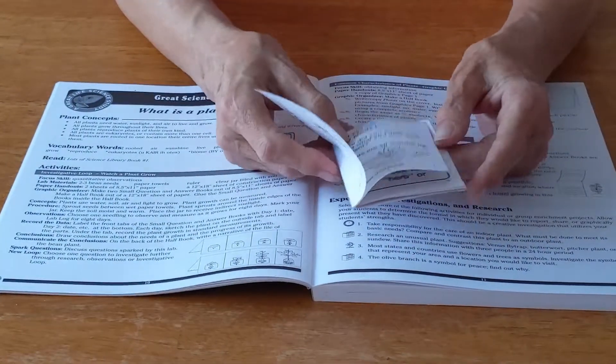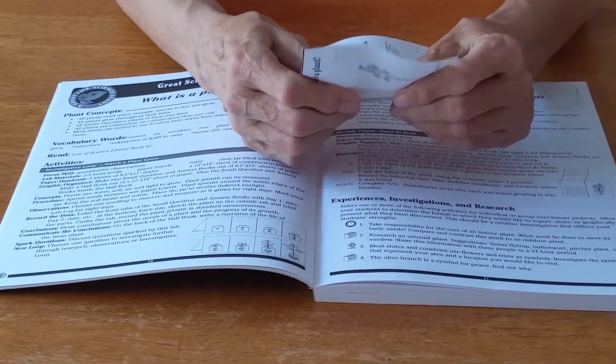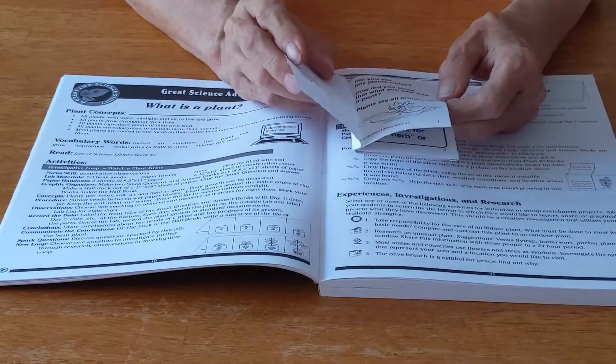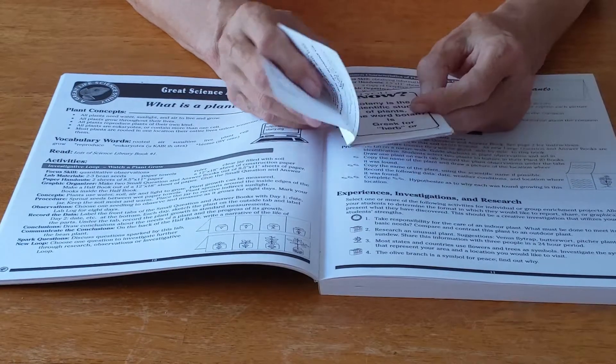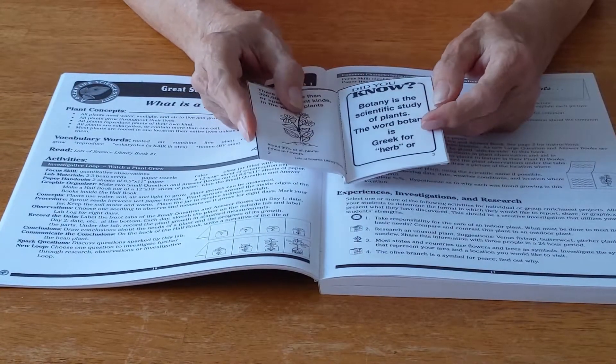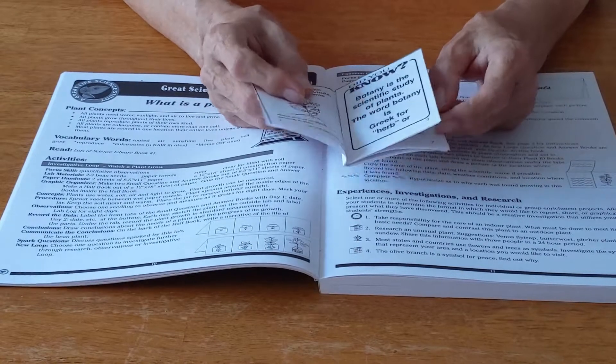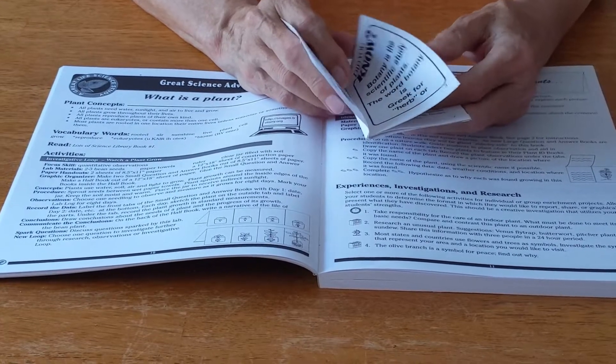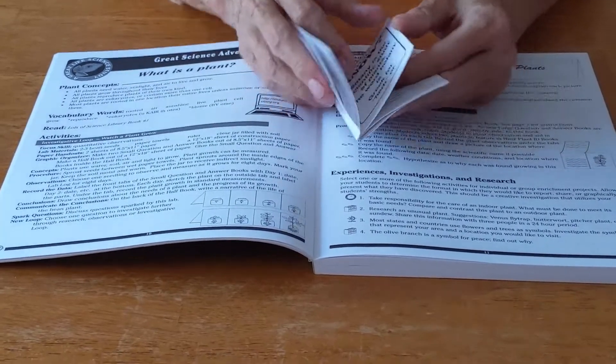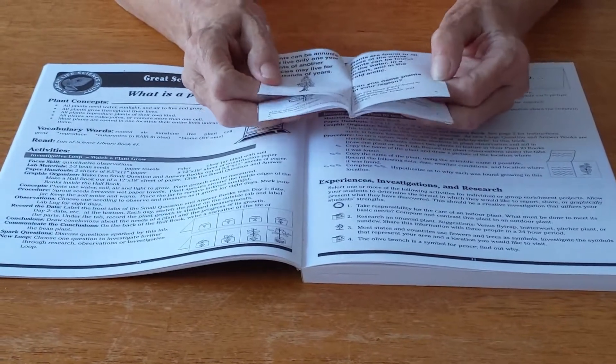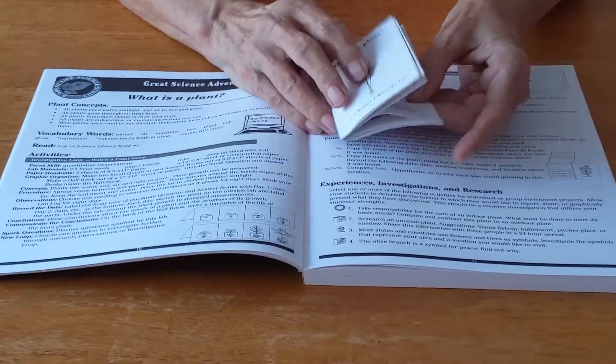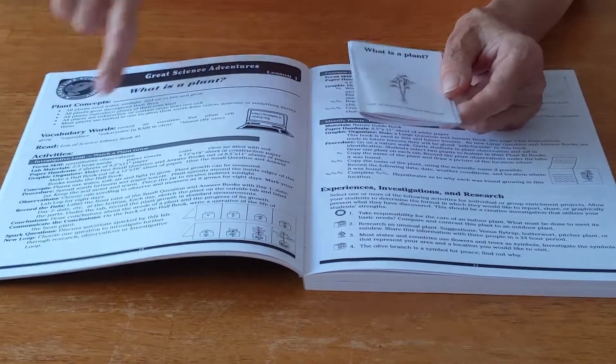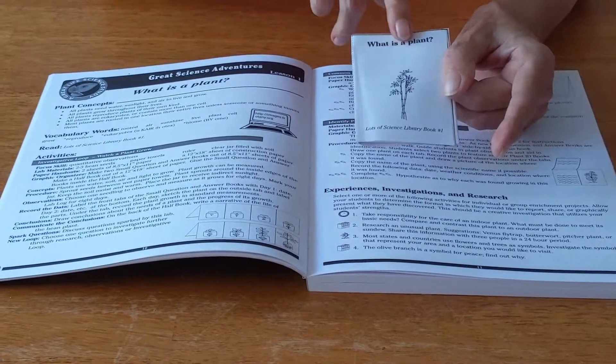So you made a copy of each book for each one of your students and they cut them out and put them together. Now you're going to sit down with your students and read the book. If you have readers in your group you can ask them to read. After you read this book, focusing on the concepts we're teaching, then you want to discuss it with your students.